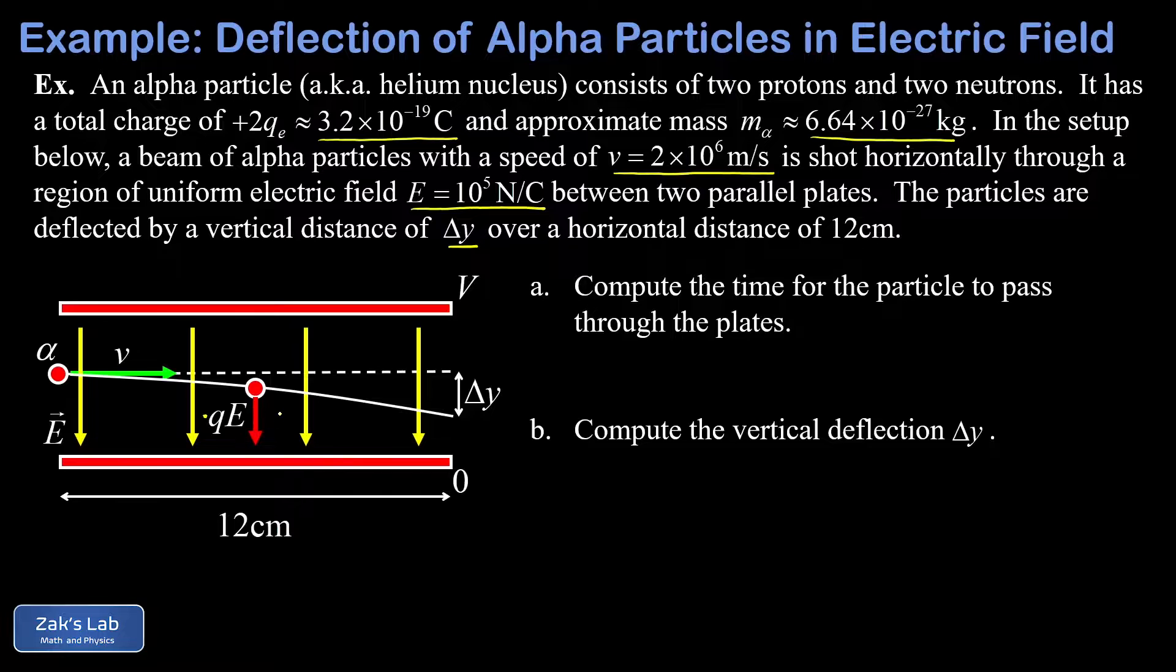Now, the motion that results from this vertical electric force is actually exactly the same thing as projectile motion. This is exerting a force only in the Y direction, so we have a Y acceleration in the problem. And there are no forces in the X direction, so the X velocity is going to be constant. That's the same thing as projectile motion.